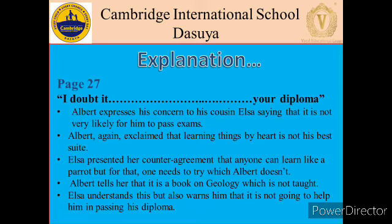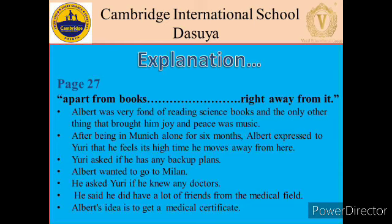Elsa does not understand why he is reading the book if it is not part of his curriculum. He clarifies that he likes studying science and considers that a reason good enough to read it. Albert was very fond of reading science books, and the only other thing that brought him joy and peace was music — he played the violin a lot until his landlady told him to stop. The sound supposedly irritated her, and she justified it by saying that the kids already made a lot of noise in the house. Albert wanted to say that she is the only one who made her kids cry all the time, but somehow resisted the urge, probably for the better.